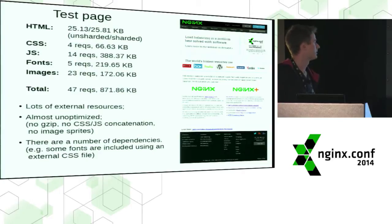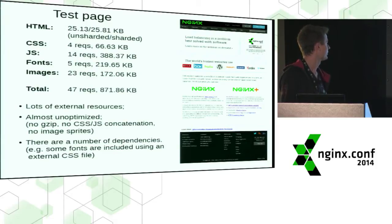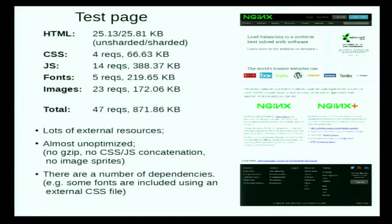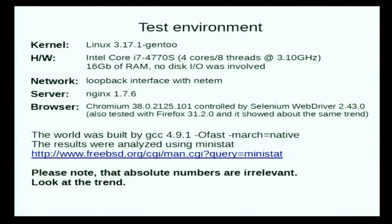Just for this talk, I made a benchmark and used the main page of our company website. As you can see, it has a lot of external resources — some of them are actually dependent on each other, and it's a really unoptimized page. I think SPDY will be good for this page. It's my test environment, but the absolute numbers don't matter — they're all relative. Just look at the trends. You may use your website and see different numbers, but the trends should be the same.